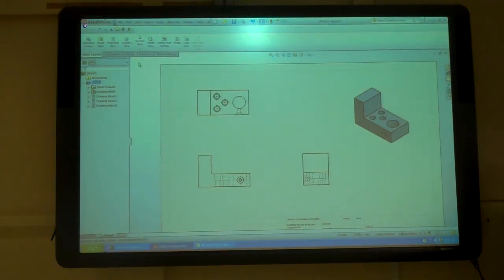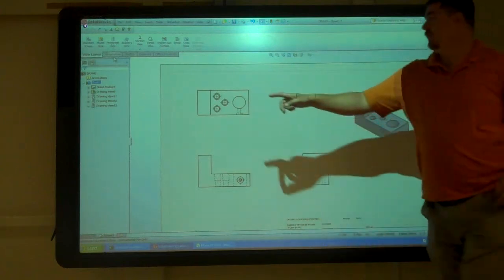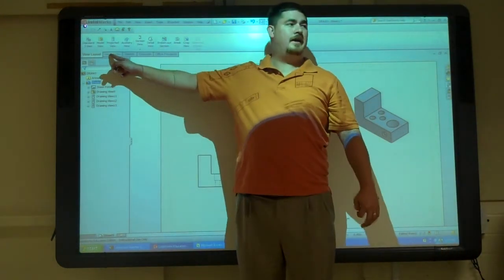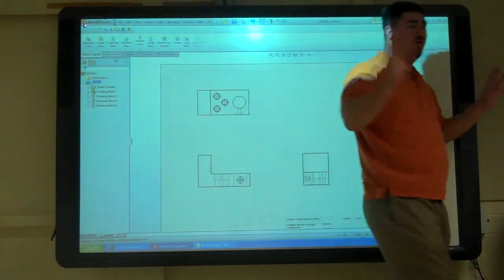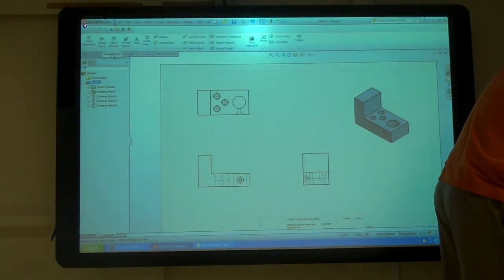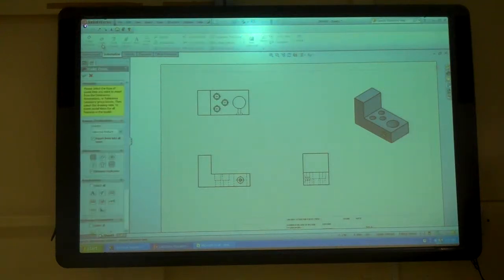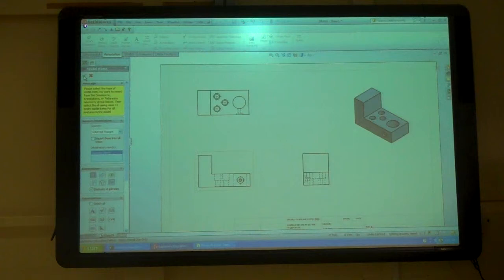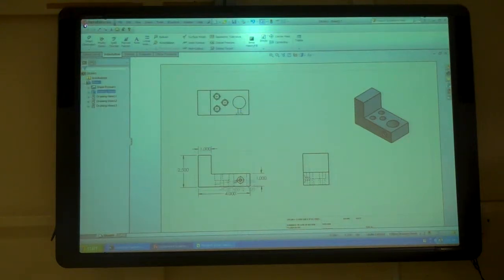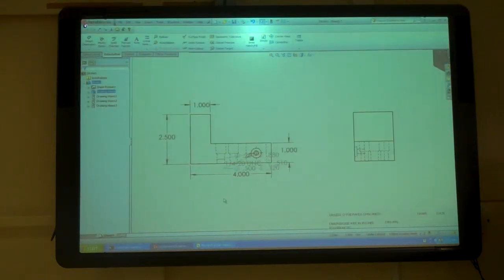So dimensioning all the nodes, everything, that's under annotation here. We go to the annotation tab. That's where we're going to have all the writing and detail kind of stuff. You see the smart dimensions like we had before? That's if you want to add new dimensions. But if you want to use the ones we already have, we're just going to go to model items. I'm going to click on that view, say okay. And now I've brought in all the dimensions it had for that part.